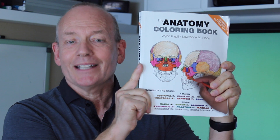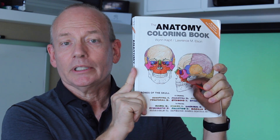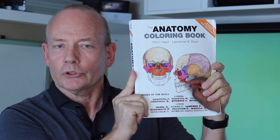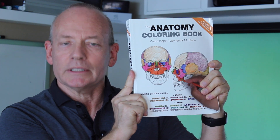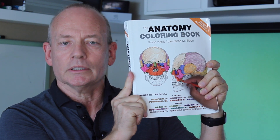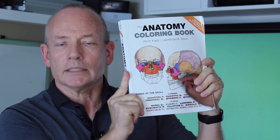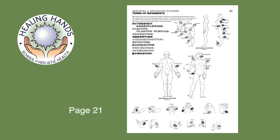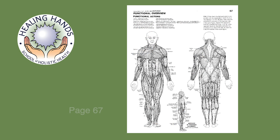The coloring book is another resource that you're going to use to learn the anatomy for circulatory massage. Here are the specific pages you need to go over for this section: on page two you have the terms of position and direction, on page 21 you have the terms of movement, and page 67 is a functional overview of the entire body.